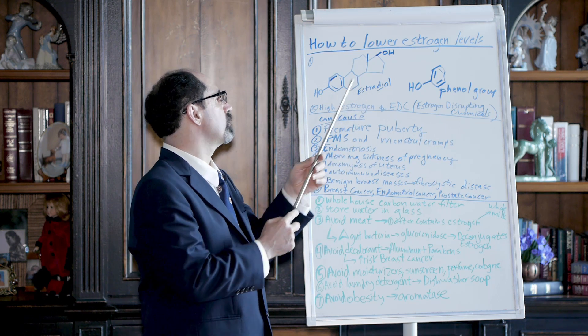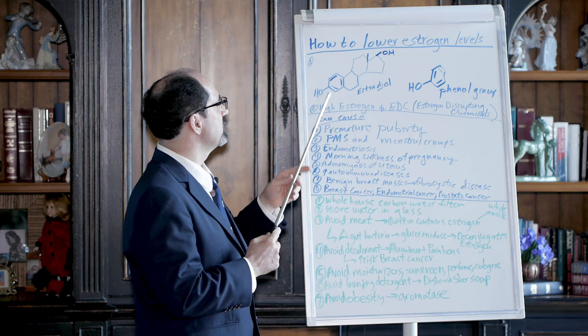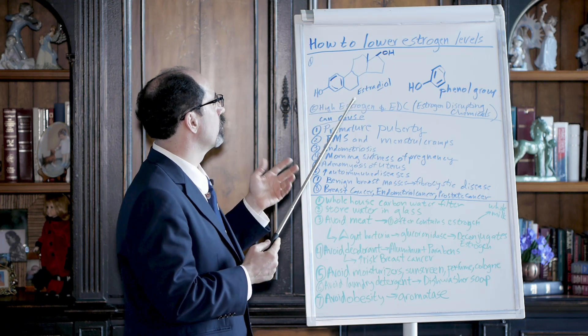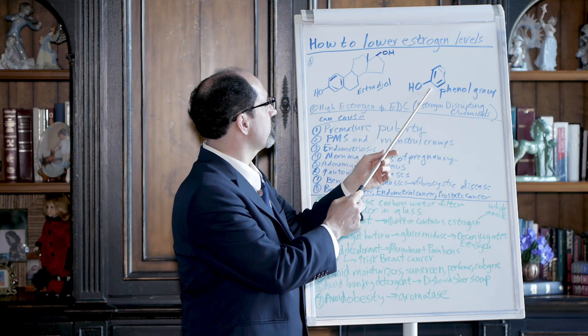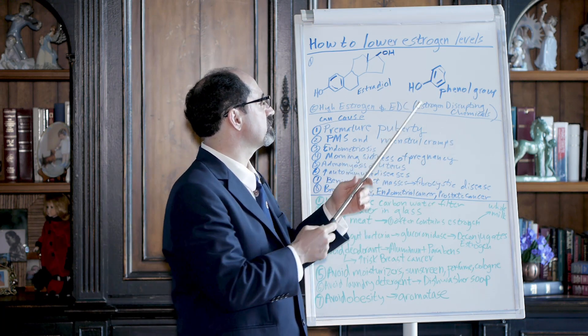Diol - di means two, ol means two alcohol groups. The most important thing about the estrogen molecule is this little corner right here. It's called a phenol group. This six carbon ring, cyclohexane, with three double bonds is called benzene, and this is a hydroxyl group.